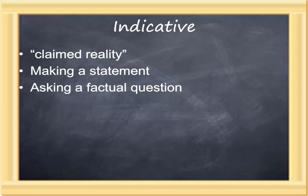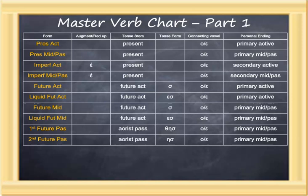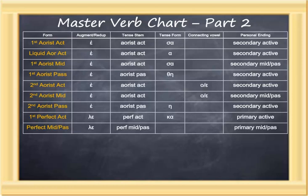In the indicative mood, reality is claimed. An indicative verb makes a statement or asks a factual question. So far in Greek, we've spent quite a bit of time on the indicative mood, focusing on the various tenses and voices. This master verb chart is only part of the list we have studied so far. With this second chart, we have the now complete list of the various tenses and voices of the indicative verb.